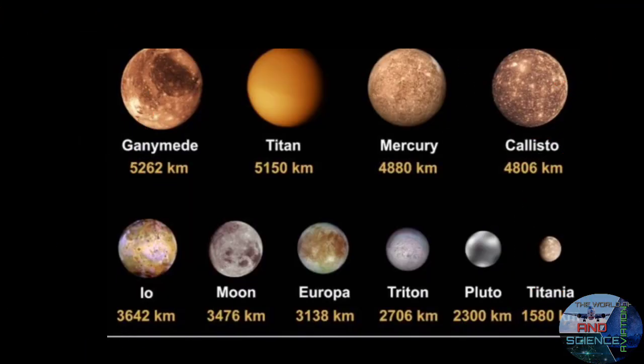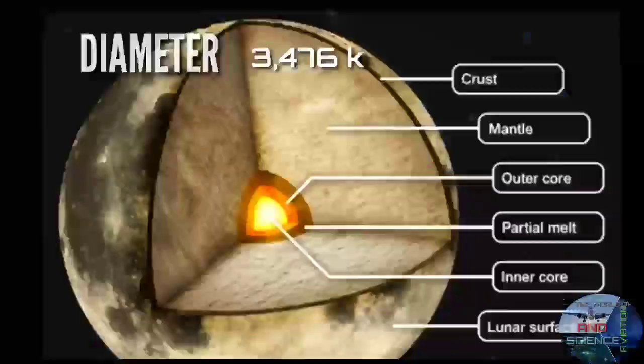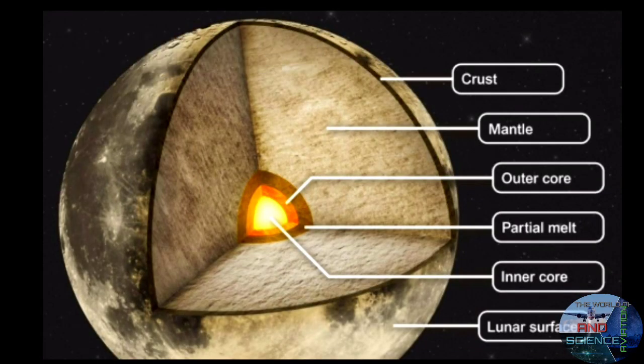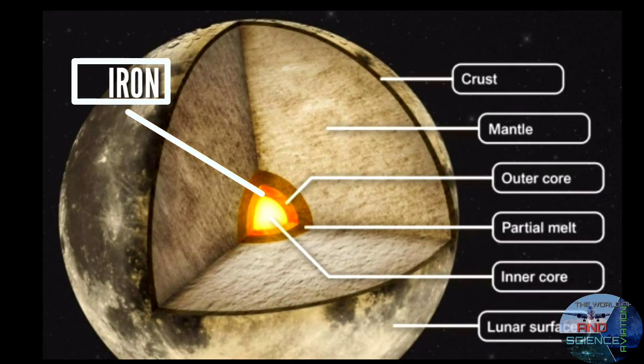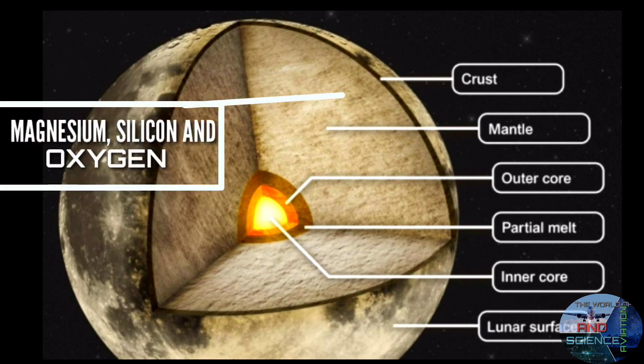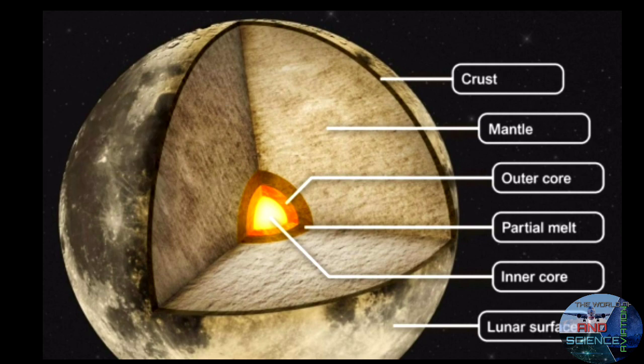Earth's moon is the sixth largest natural satellite in the solar system. It has a diameter of about 3476 km. Its inner and outer core contains iron. The mantle and the crust contains magnesium, silicon and oxygen. It is not known for certain where the moon came from.